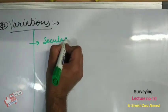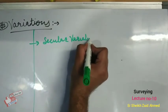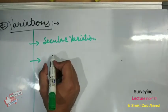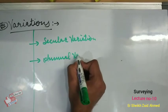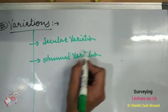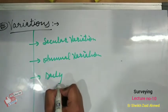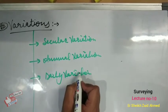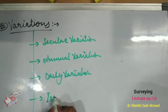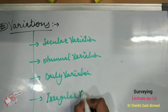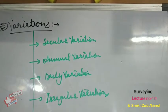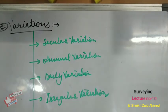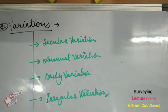The first type is secular variation: the magnetic meridian swings like a pendulum to the left and to the right of the true meridian, with a period of oscillation of approximately 250 years. The second type is annual variation: in a year the declination changes from one to two minutes from its mean position.